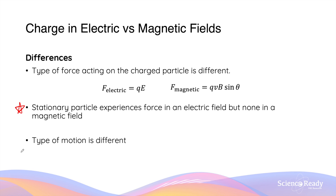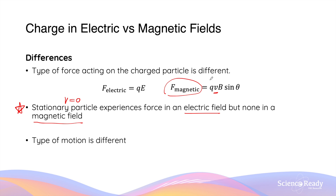The second difference is perhaps the most important. A stationary particle — that is, when the velocity is zero — will experience a force inside an electric field, but will not experience any forces inside a magnetic field. It is very important to remember that a magnetic field can only exert forces on moving charged particles. You can remember this by referring to the equation where the magnetic force is dependent on the velocity of the charged particle. If the velocity is zero, the magnitude of the magnetic force will also become zero, so magnetic forces are only present for moving charges and not stationary particles.